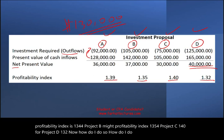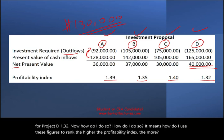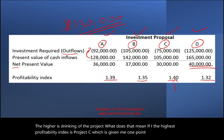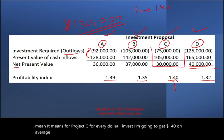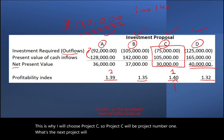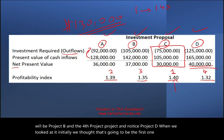The higher the profitability index, the higher the ranking of the project. The highest index is project C at 1.40, meaning for every dollar invested in project C you earn $1.40 on average — making it the best project. So the ranking is: first C, second A (1.39), third B, and fourth D. Notice that project D, which initially looked most attractive by NPV alone, is actually ranked last.